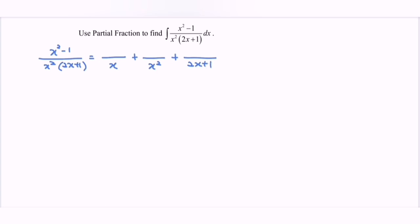This refers to the first factor where we have x, so the numerator will be a constant A. Next, referring to x squared — this is a repeated linear factor, not a quadratic factor — so the numerator will also be a constant B. Finally, we have 2x plus 1, which is also a linear factor, so the numerator refers to constant C.